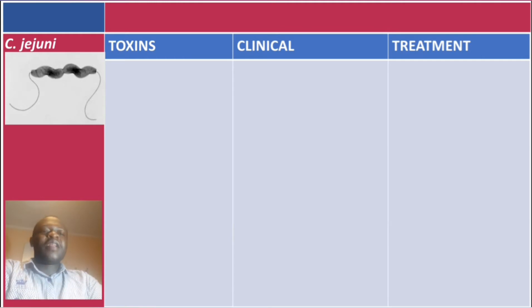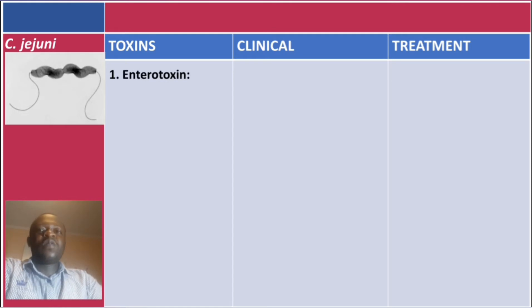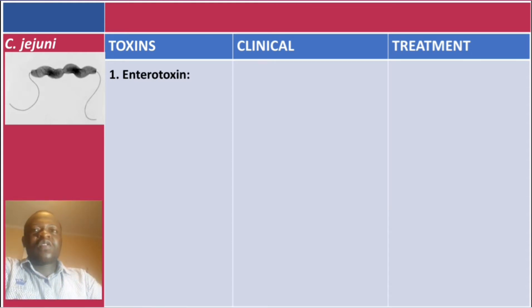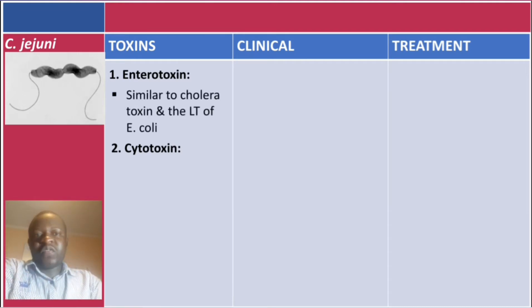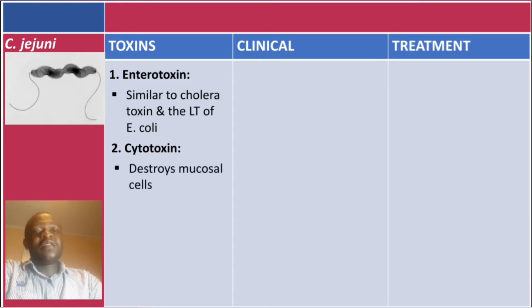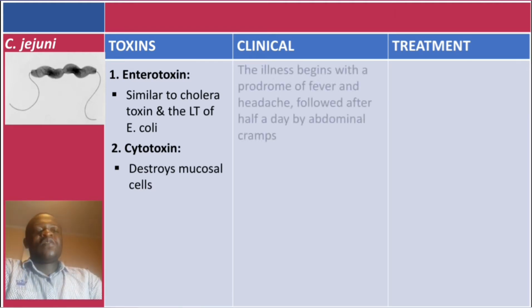There are two toxins found in Campylobacter jejuni. The first is an enterotoxin, and the second is a cytotoxin. The enterotoxin is similar to the cholera toxin and the heat-labile toxin of E. coli — the same mechanism. The cytotoxin destroys the mucosal cells, which is why this bacteria is invasive.